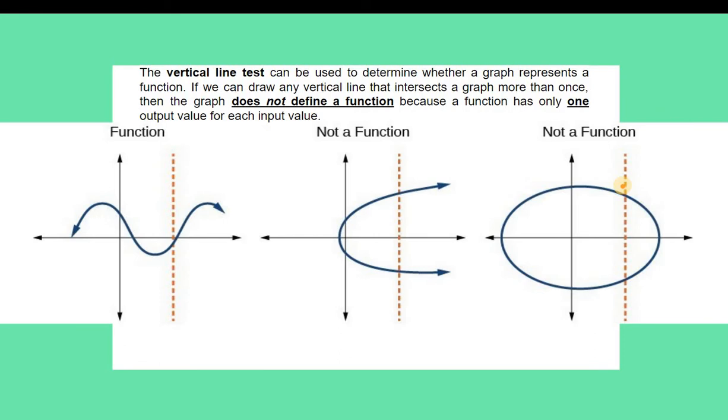For our third example here, it is also categorized as not a function. The reason is that the data is drawn in a circular manner, and what it means is that it hits the vertical line twice. So you have one point here and you have one point here.